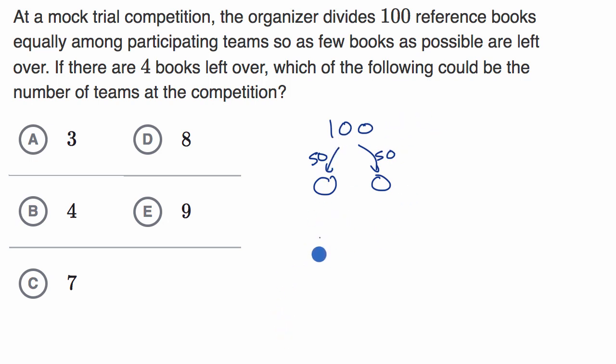But if, for example, you had three groups, if you wanted to divide it evenly, you could give 33 there, 33 there, 33 there, but then you would have one left over because this would be 99 and you would have one that you wouldn't be able to give to any of the teams because you have to equally divide them.